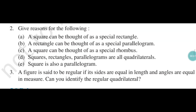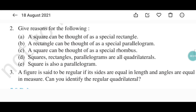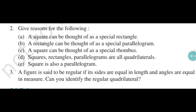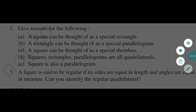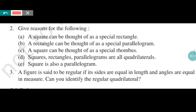Question number three: a figure is said to be regular if its sides are equal in length and angles are equal in measure. Can you identify the regular quadrilateral? The answer is square, because a square has all sides equal and all angles equal.